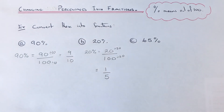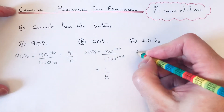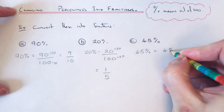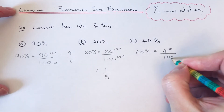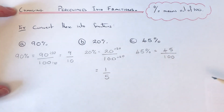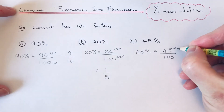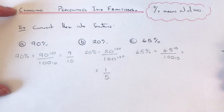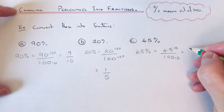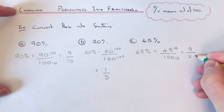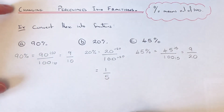Let's move on to the third example. This time we've got 45%. So 45% is the same as 45 out of 100. We just need to look for a times table both 45 and 100 are in — that will be 5. So we can divide the top and bottom by 5. 45 divided by 5 is 9 and there are 20 fives in 100, so we get the answer 9 twentieths.